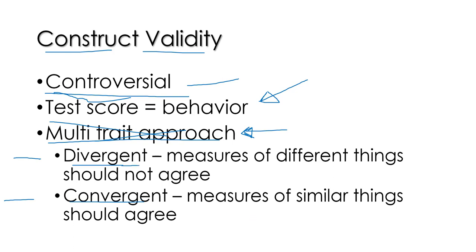Divergent validity is based on the idea that things that measure different things should not agree. If I have a test that measures gender role and a test that measures lifestyle enjoyment, those two tests measure different concepts, so the scores should be very different — there should be no correlation, essentially zero. However, tests that measure similar things, such as a test for gender and a test for gender role, should show a correlation between scores.